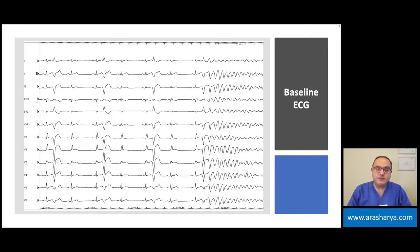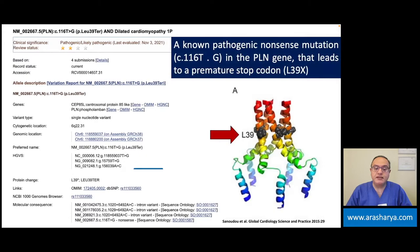The most important consideration is that when we have such a patient, it might be an idiopathic PVC from the moderator band leading to ventricular fibrillation, but we have to think about a genetic background which creates this kind of arrhythmia. This was exactly the case in this patient — she has a non-pathogenic nonsense mutation in the phospholamban gene that leads to a premature stop codon, the so-called L39X mutation.